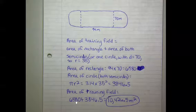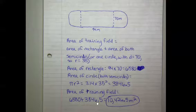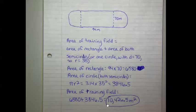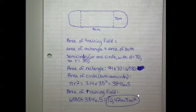So the area of the training field is the area of the rectangle plus the area of the two semicircles: 6580 plus 3846.5 equals 10,426.5 meters squared.